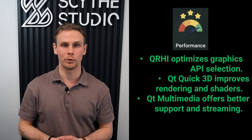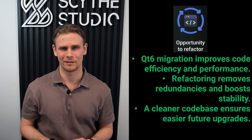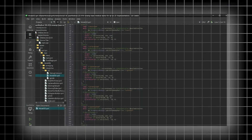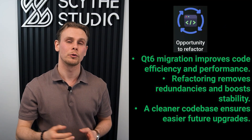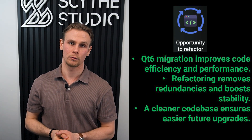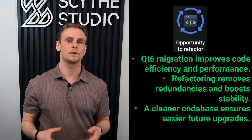Porting from Qt 5 to Qt 6 isn't just about upgrading — it's also a great opportunity to refactor your codebase and reduce technical debt. Over time, projects accumulate outdated code, inefficient structures and deprecated libraries. Migrating to Qt 6 forces you to revisit and clean up your code, making it more efficient, maintainable and future-proof. By refactoring during the transition, you will eliminate redundant code, streamline performance and adopt modern best practices. This not only improves stability, but also makes adding new features easier in the long run — this is your chance to build a cleaner, stronger and more future-ready application.